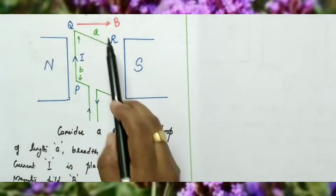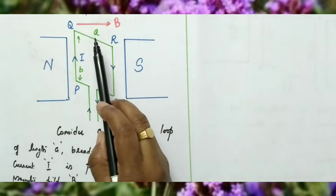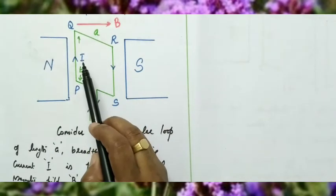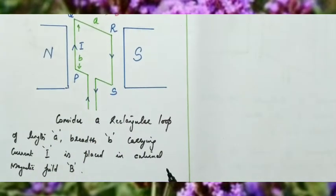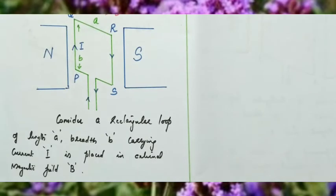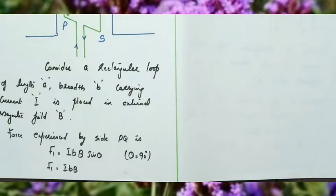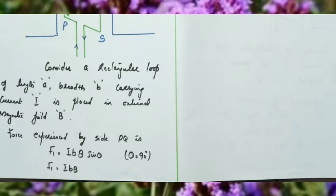This rectangular current loop of length A and breadth B carrying current I is placed in an external magnetic field. We know that when a current carrying conductor of length L carrying current I is placed in an external magnetic field, it experiences a force F equal to ILB sinθ.